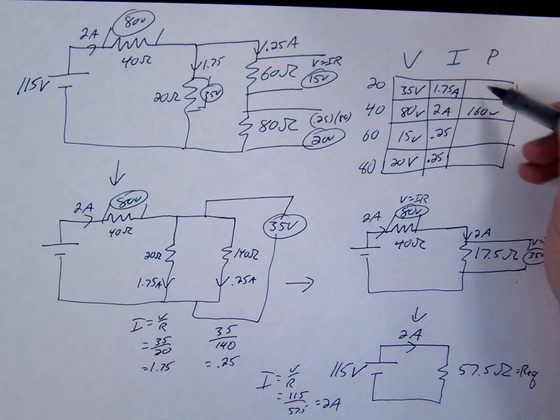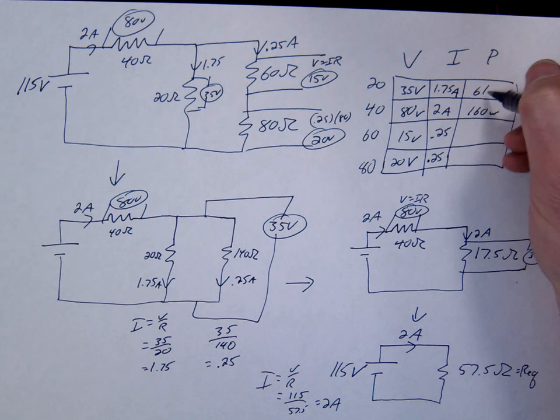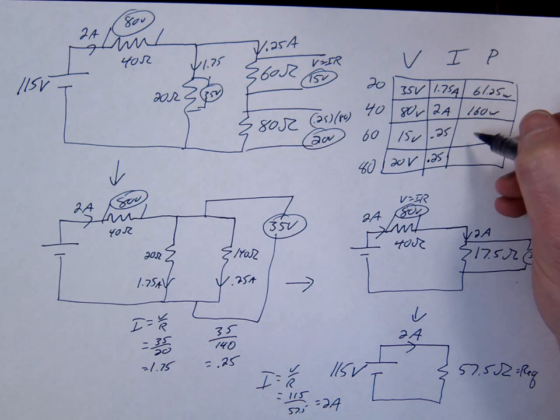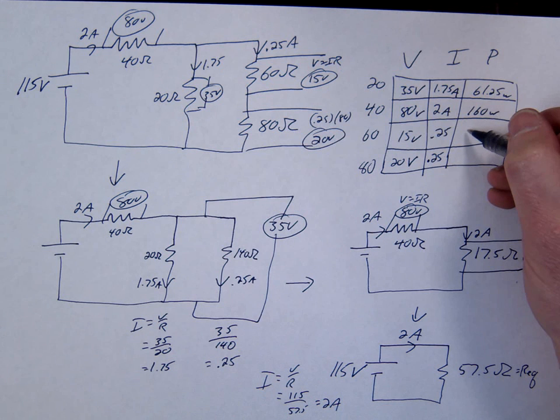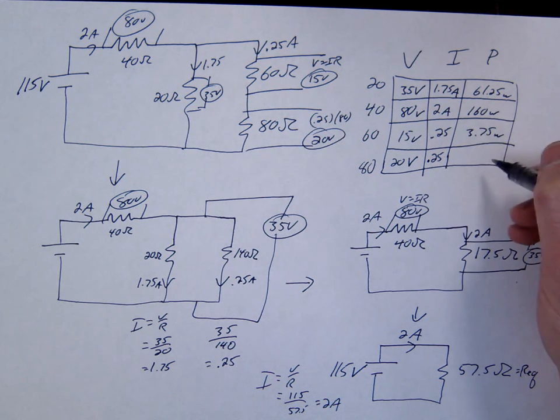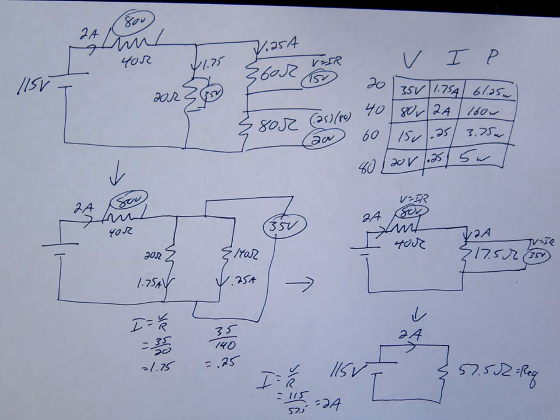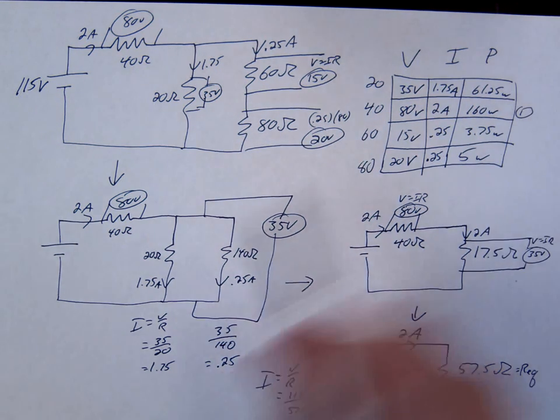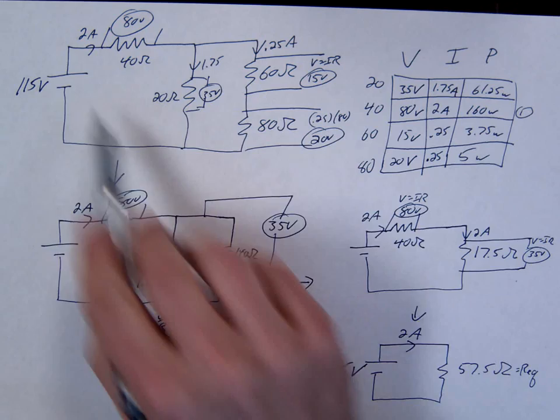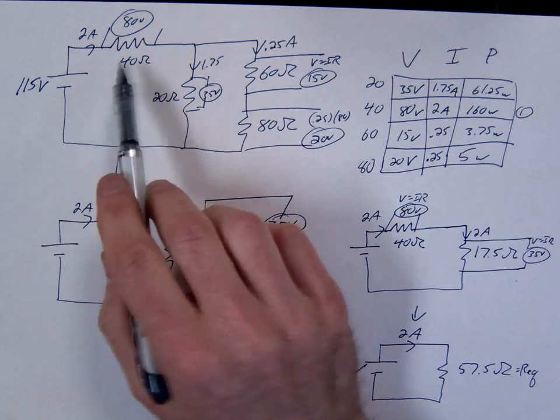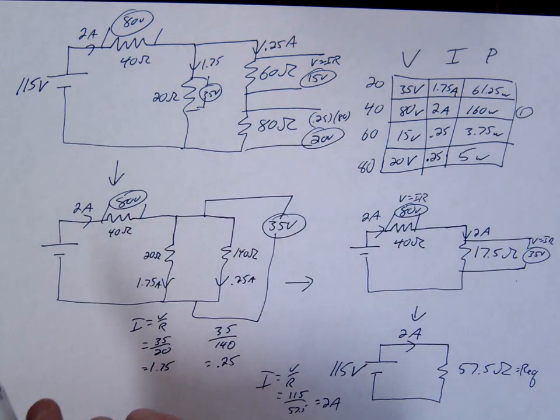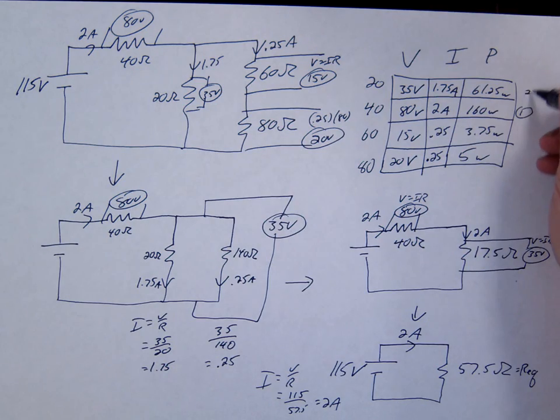Can someone fill these in for me? What's the 20 going to be for power? And the 60? 3.75. And the 20? Which one's the brightest? 40. This one gets the maximum current. All the current goes through here. Here they start to split off. Which one's in second place? 20.